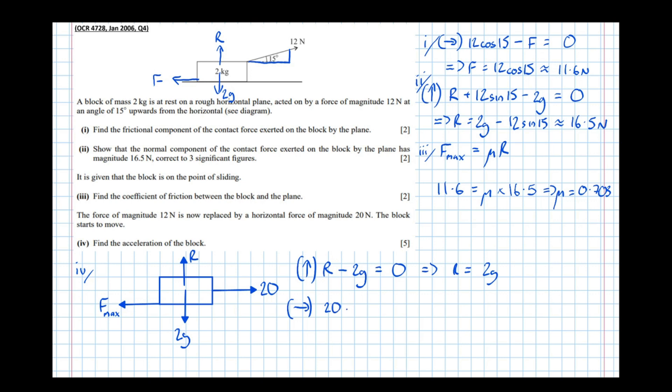So 20 take F_max equals mass times acceleration, equals the mass, which is 2 kg, times the acceleration. And this time, we know it's accelerating at a rate greater than 0. So we need to work that out.